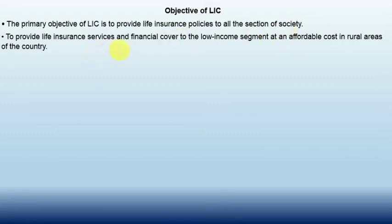The primary objective of LIC is to provide life insurance policy to all sections of society. The second objective is to provide life insurance services and financial cover to the low-income segment at an affordable cost in rural areas of the country.